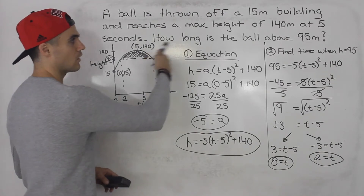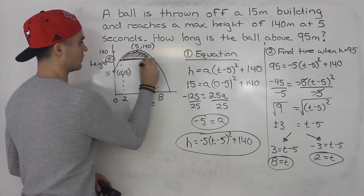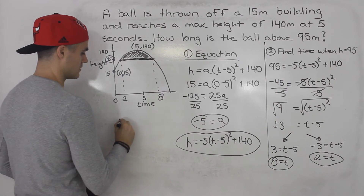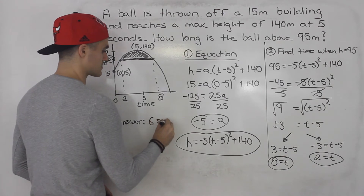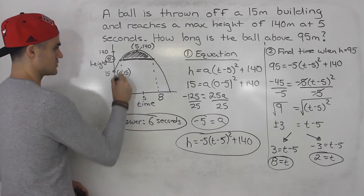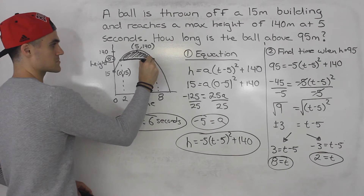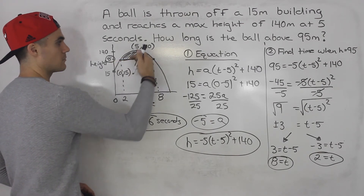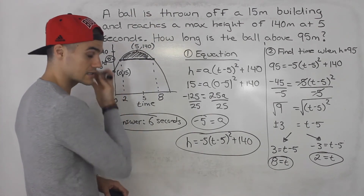The question asks how long is the ball above 95 meters. It's above 95 meters over this interval, so 8 minus 2 gives 6 seconds. At 2 seconds the ball reaches 95 meters on the way up, and at 8 seconds it comes back down to 95 meters. So between 2 seconds and 8 seconds the ball is above 95 meters — a 6 second time interval.